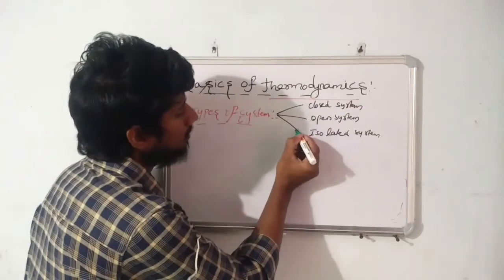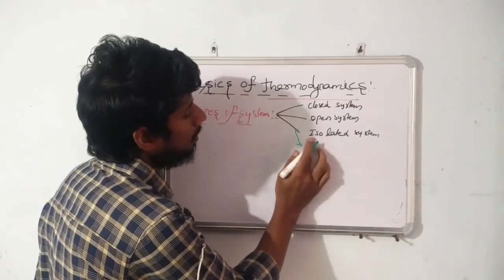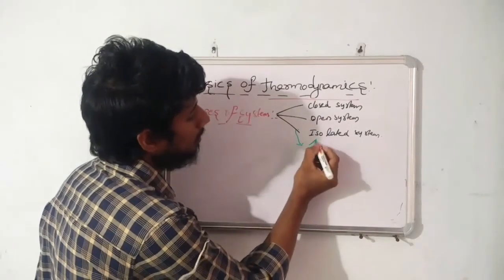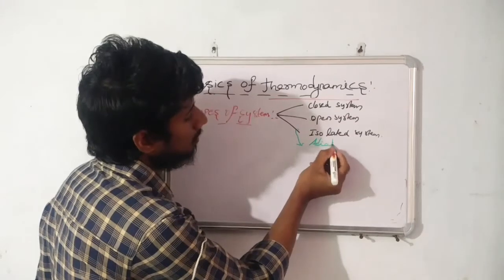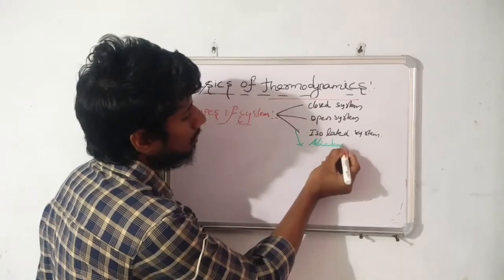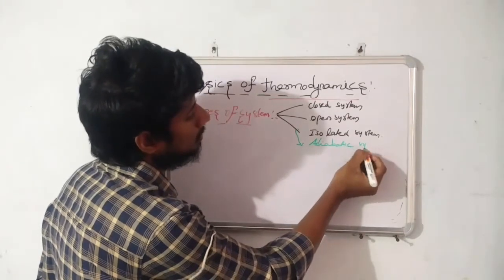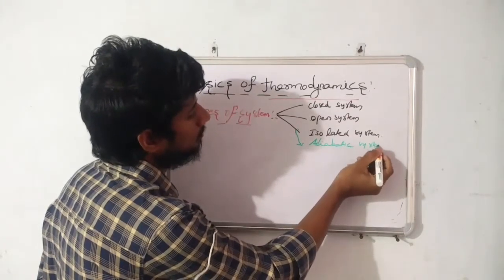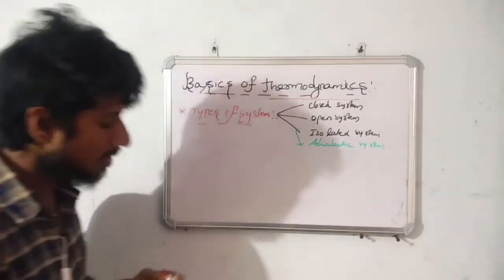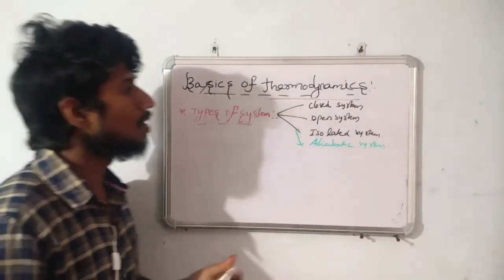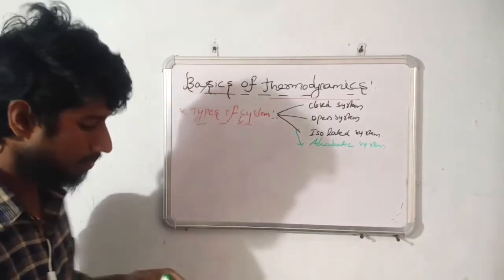There is one more system that many people are not aware of — it is the adiabatic system. Let's start with the first one: the closed system.